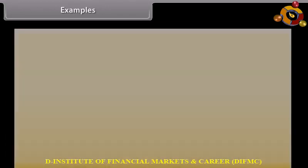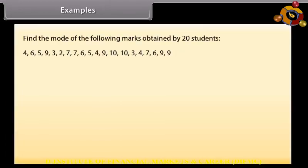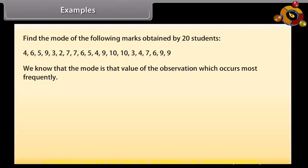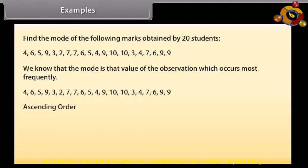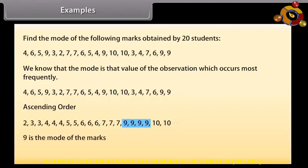Example — Mode: Find the mode of the following marks out of 10 obtained by 20 students. We know that the mode is the value of the observation which occurs most frequently. Arranging these marks in ascending order, we can see that 9 is occurring most frequently. So the mode of the marks is 9.